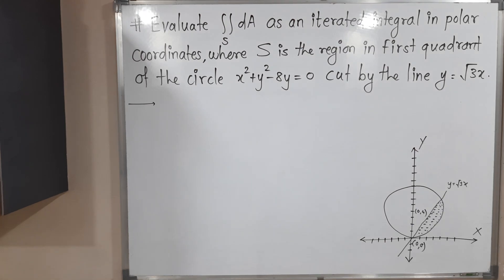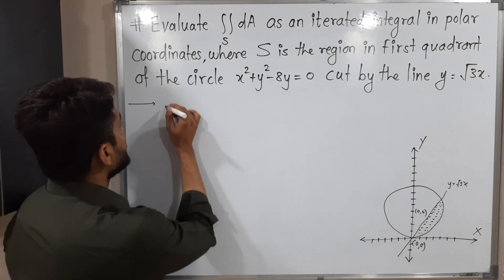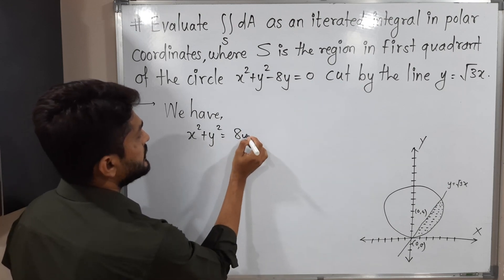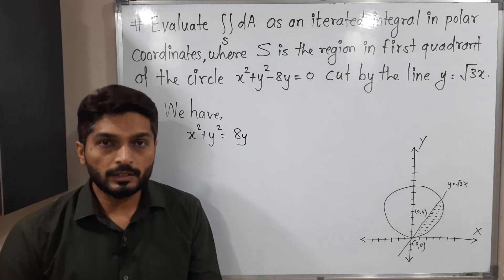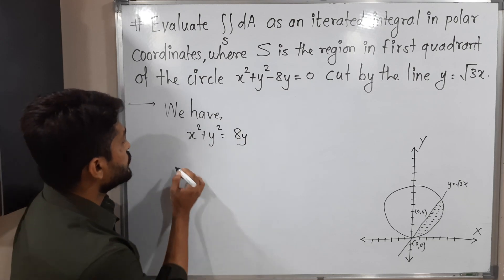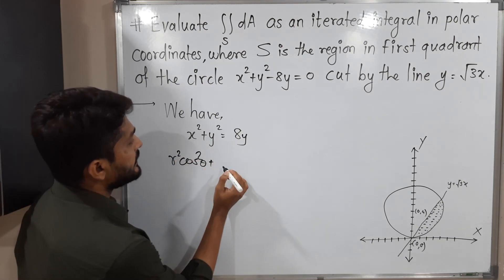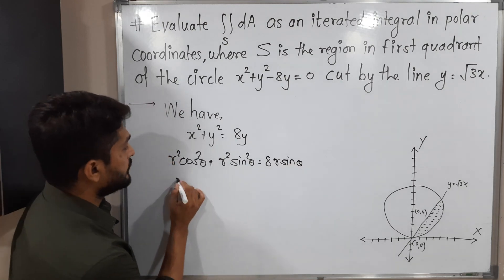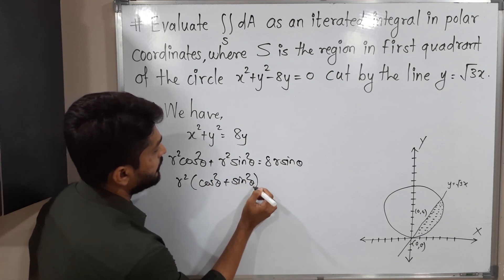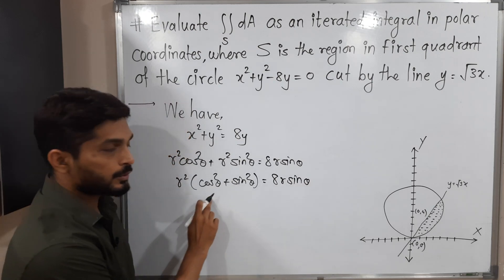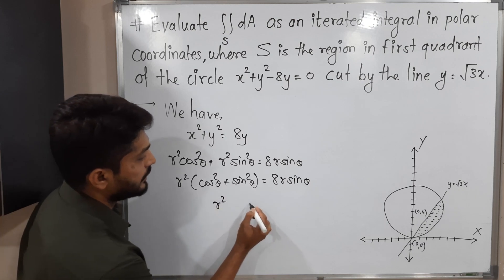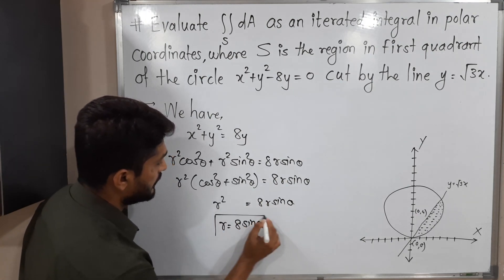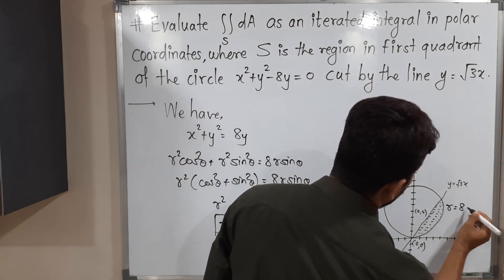Let us convert the given equations to polar form. For the circle: x² + y² = 8y. Substituting x = r cosθ and y = r sinθ, we get r²cos²θ + r²sin²θ = 8r sinθ. Taking r² common: r²(cos²θ + sin²θ) = 8r sinθ, so r² = 8r sinθ. Cancelling r from both sides, we get r = 8 sinθ. This is the equation of the circle in polar form.